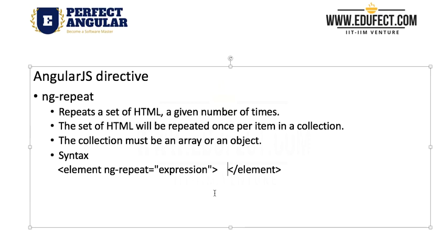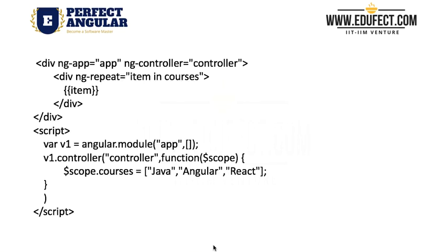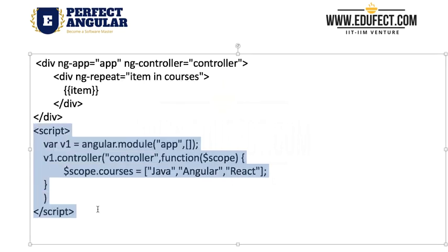Let's look at an example as to how do we use it. First let's understand the script. In the script we have declared this variable courses, and as we can see this courses is an array and this array has three values: Java, Angular, and React.